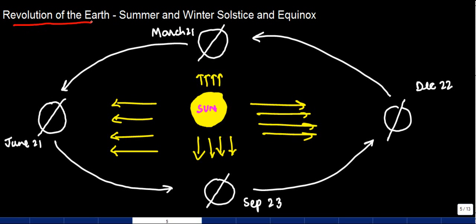In this video we cover the revolution of the Earth, summer and winter solstice, and equinox. Revolution of the Earth is the movement of the Earth around the Sun. In this video you can notice the white shape is the Earth, the line going across is the axis of the Earth, and the movement of the Earth around the Sun is what is known as revolution.